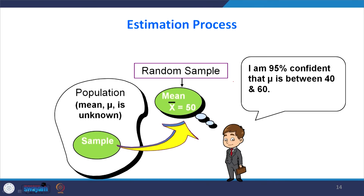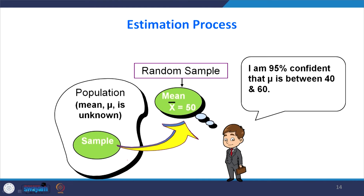Looking at the estimation process: the population mean mu is unknown. We take a sample — say the sample mean is 50 — and from that we determine a lower limit and upper limit for the population parameter mu at a certain level of confidence, for example saying we are 95% confident that mu is between 40 and 60. The confidence level 95% means 1 − alpha = 0.95. From repeated samples, 95% of all confidence intervals constructed will contain the unknown true parameter.